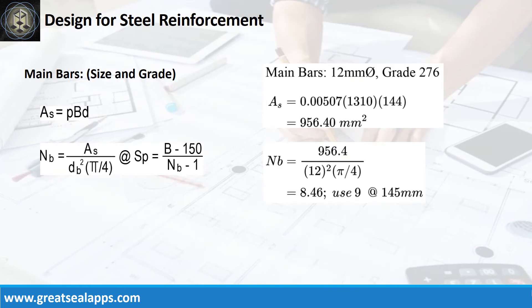Given ρ equals 0.00507, B equals 1,310 mm, and D equals 144 mm, the area of steel for main bars is 956.4 square millimeters, and the number of bars for 12mm bar is 9.